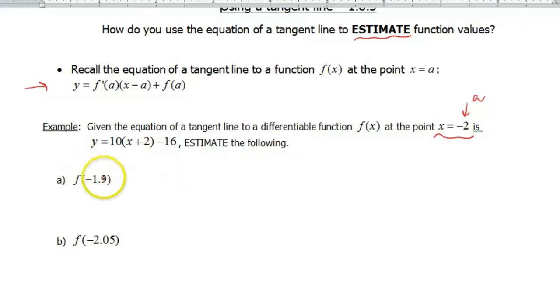Okay, so all we're gonna do is take the value that we're given and plug it into our tangent line. So this is gonna be approximately equal to 10(-1.9 + 2) - 16. So once you crunch out that algebra, you should get a value of -15.